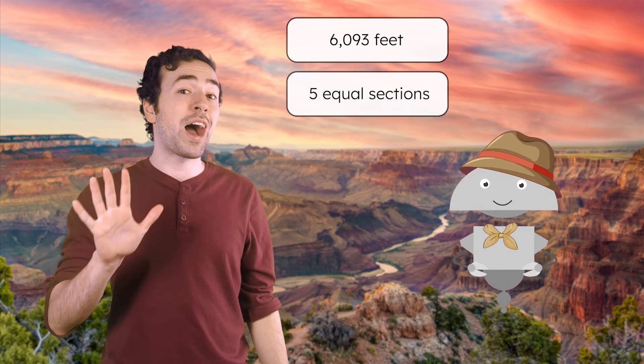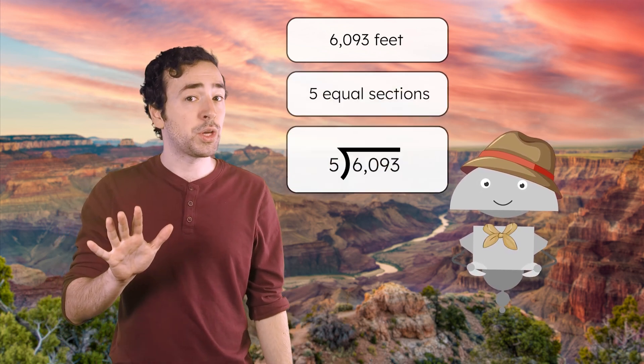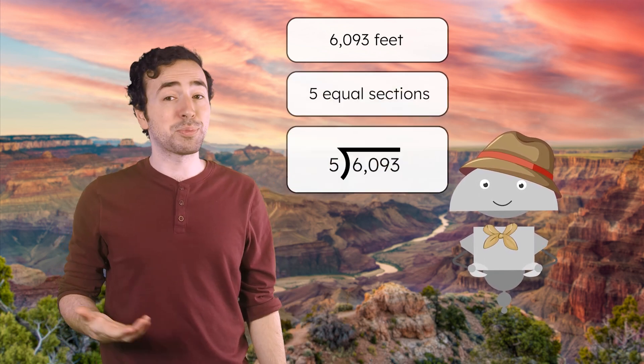The view from the top of the canyon is breathtaking. We got a permit to hike down into the canyon and camp along the riverbank. The average depth of the canyon is over 6,000 feet. Park rangers say it's doable in one day, but we're gonna break up the hike into five equal sections. We can use our long division skills to help us plan our hike.